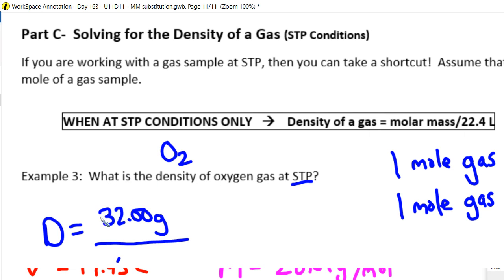Oxygen one mole will weigh 32 grams. And if you have one mole of oxygen gas, it's going to take up a volume of 22.4 liters. And so here our density is right around 1.43 grams per liter.